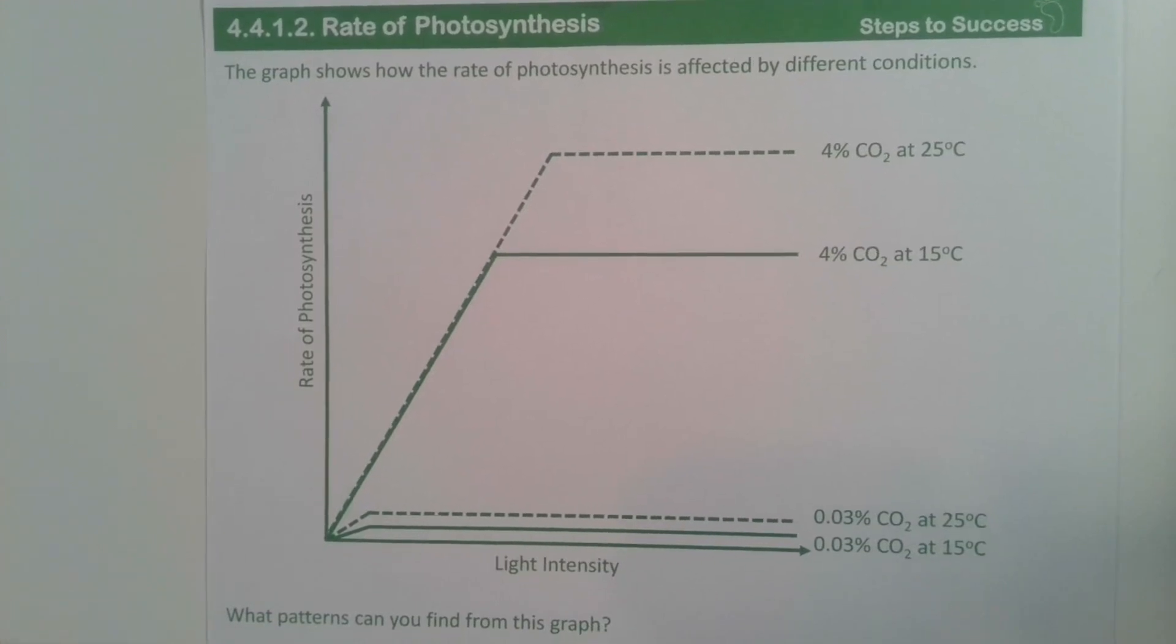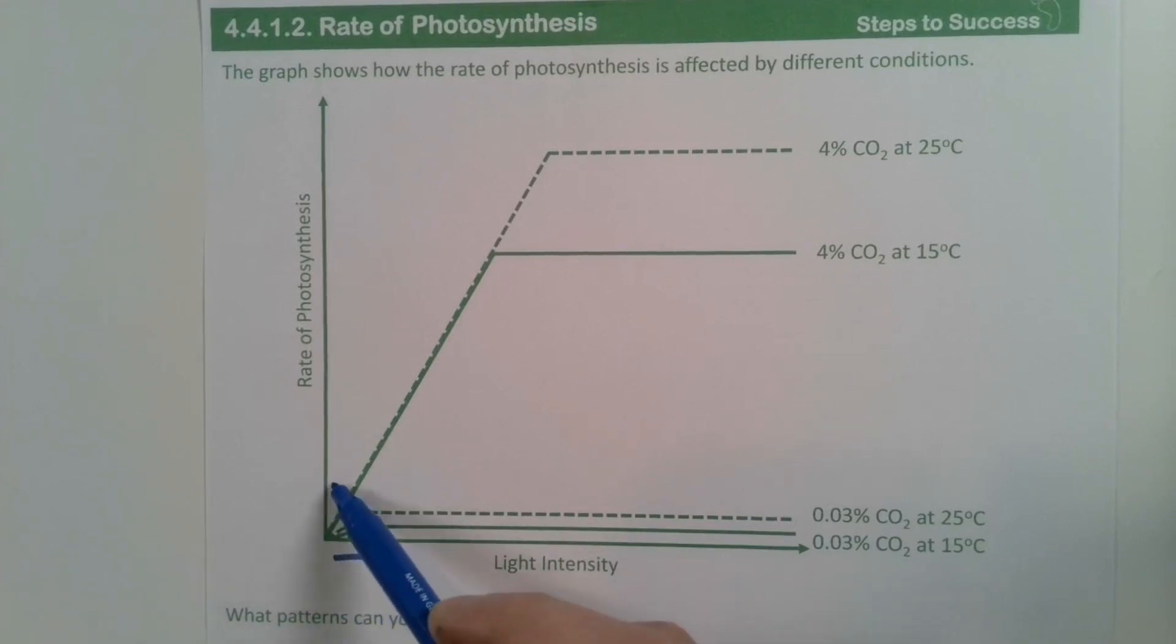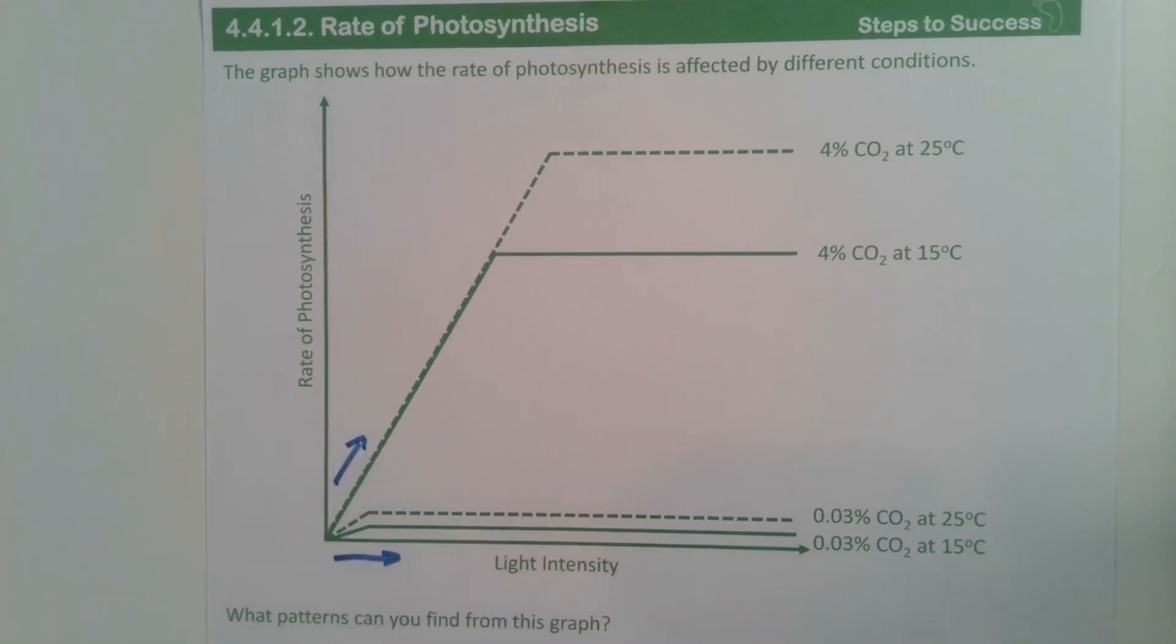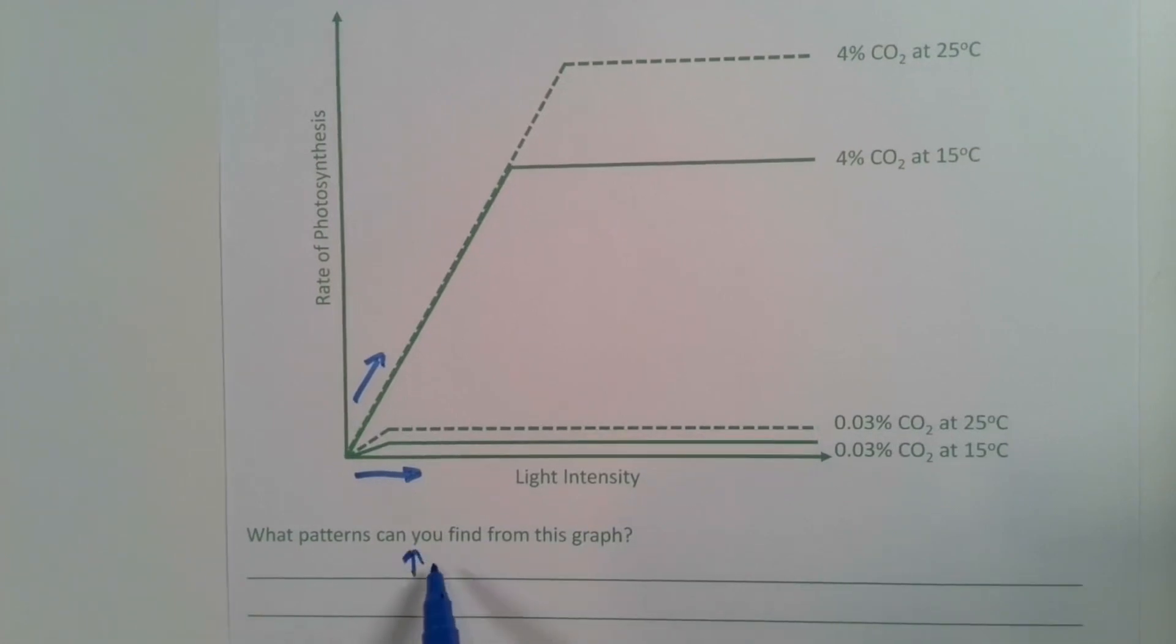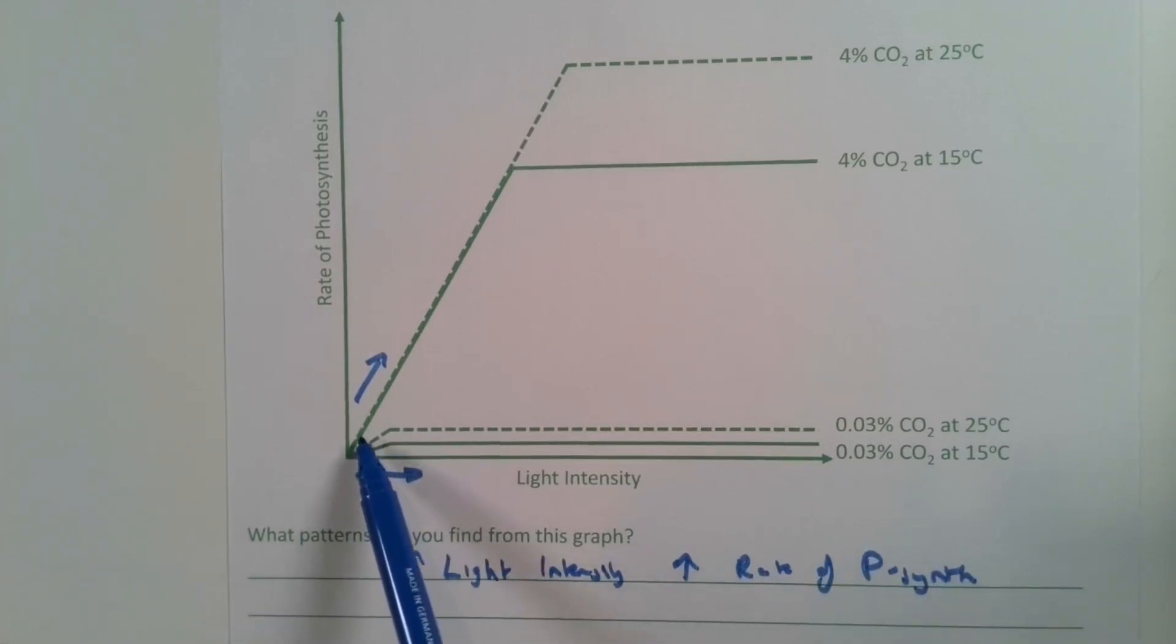When looking at this graph, we can first of all see that as the light intensity increases, so does the rate of photosynthesis. This would be enough for our first marking point. We can see this on the graph because as the light intensity goes up, so does the gradient on the line.